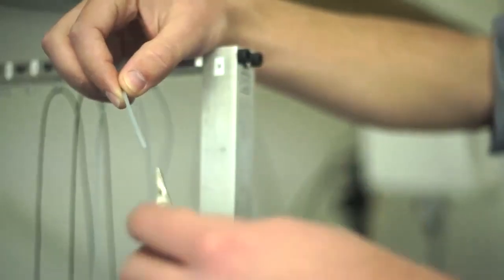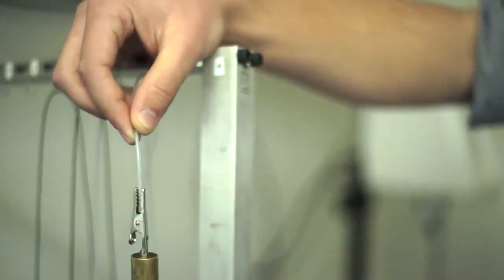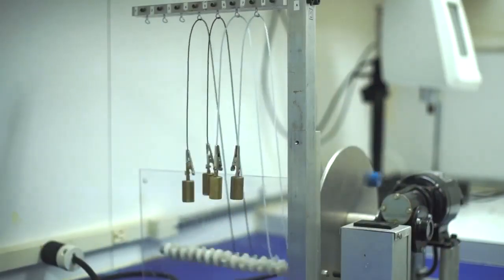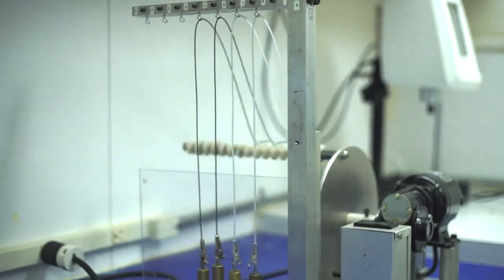On the end of the fly line, we attach a weight that is analogous to a weight that you would see while you're casting or fighting a fish, and essentially that line just goes back and forth through that tip top guide many times until it breaks.